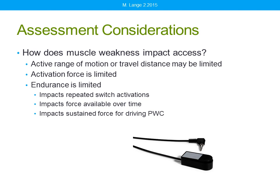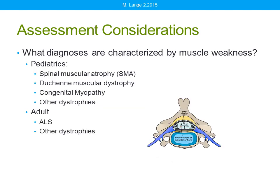If the client is driving a power wheelchair, that requires sustained force — the client has to push the switch down and hold it the entire time they want sustained movement. In the pediatric world, we see muscle weakness in clients who have spinal muscular atrophy, Duchenne muscular dystrophy, congenital myopathies, and other dystrophies. In the adult population, the group with the most challenge with muscle weakness is ALS — we have to really carefully look at the best switch for those clients as well.